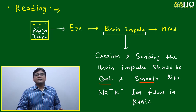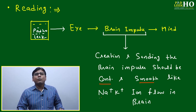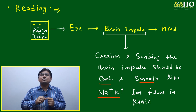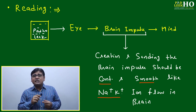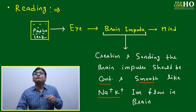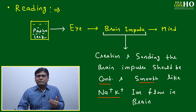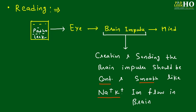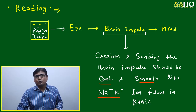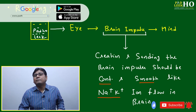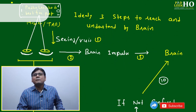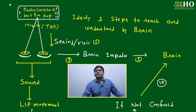Reading should be a continuous flow of brain impulses, smooth and unbroken. Just like in the brain, sodium ions (Na⁺) and potassium ions (K⁺) keep flowing in a chain — so smooth and continuous that if that chain is disturbed for a few seconds, you may need to go to the hospital. That flow is critical to being alive and healthy. Similarly, your brain impulses during reading must be very smooth and continuous.